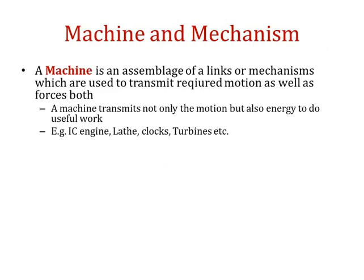A machine is an assemblage of links or mechanisms which are used to transmit required motion as well as forces both. A machine transmits not only the motion but also energy to do useful work. For example, IC engine, clocks, turbines, etc.